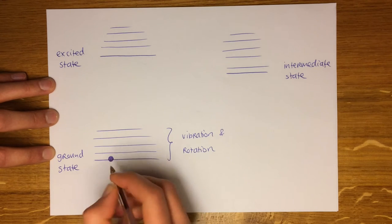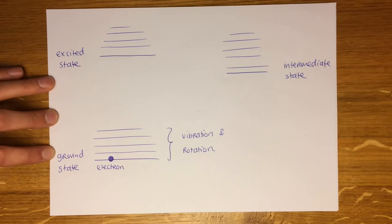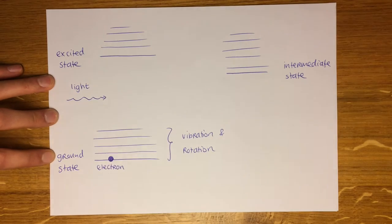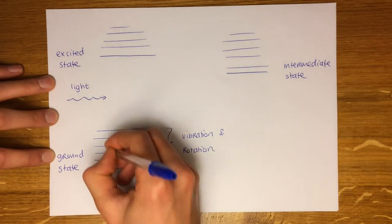In the dark electrons are in the ground state. When exposed to light the energy can be absorbed by an electron causing it to jump to the excited state levels. Now there are two possible routes for the electron to return to the ground state.